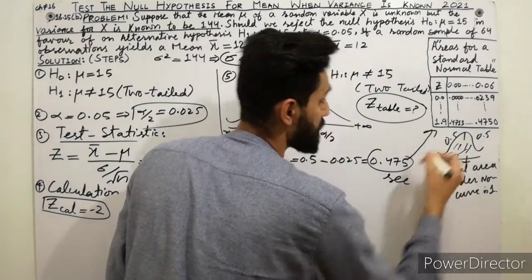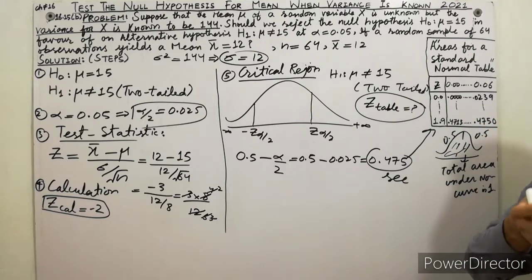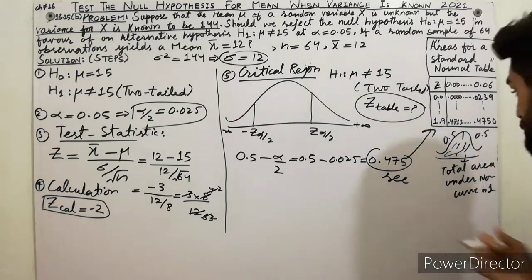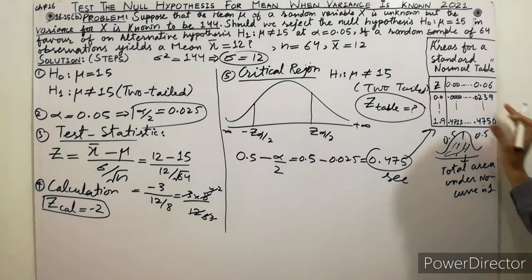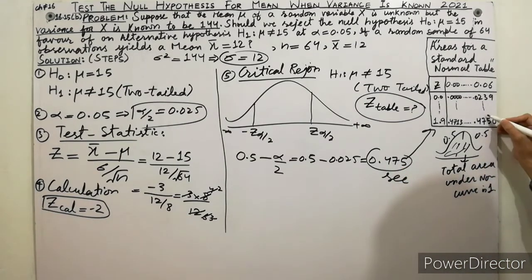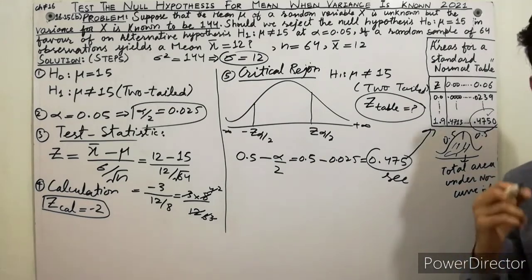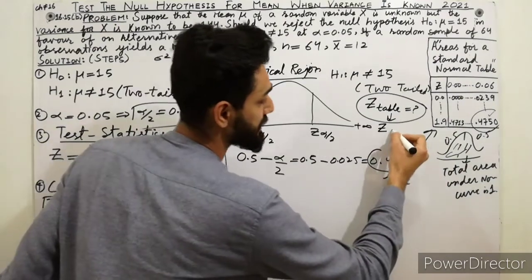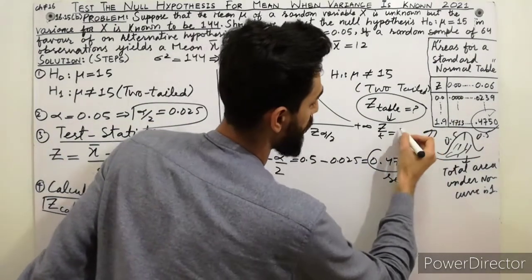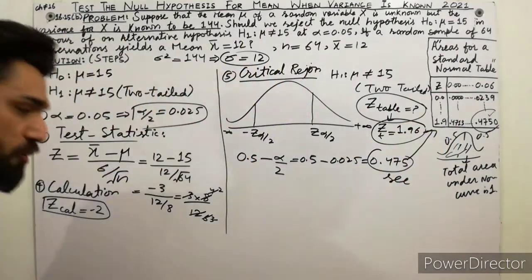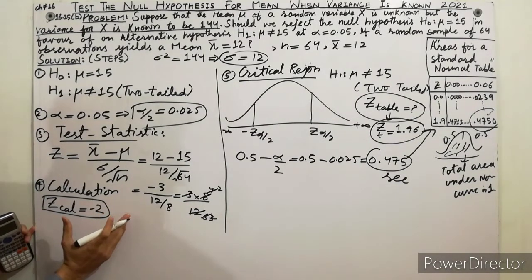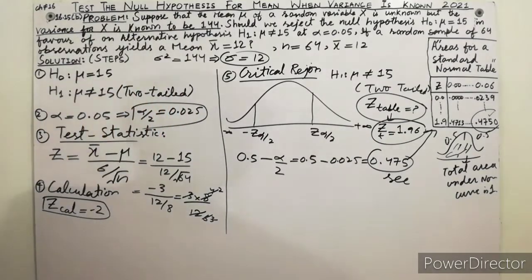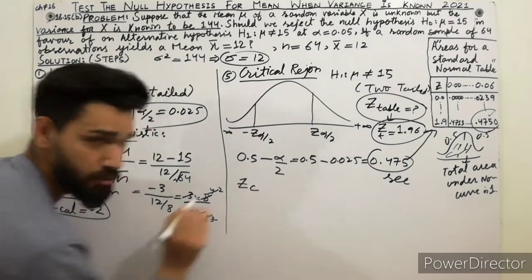We must look up the value 0.475 in the table of areas of the standard normal distribution, which I will provide. That table is very helpful for solving any hypothesis testing problem. Looking at the short table shown here, the value 0.475 corresponds to z equal to 1.96. So the z-table value is 1.96.